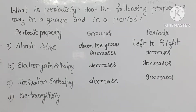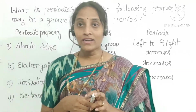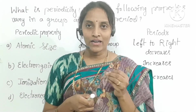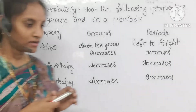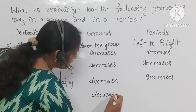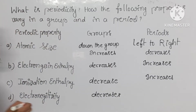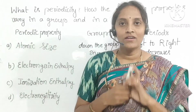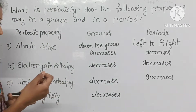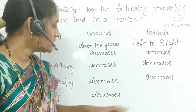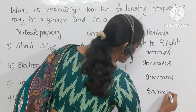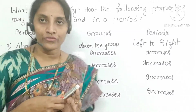Coming to electronegativity — the relative tendency to attract the bond pair of electrons towards itself. In groups, electronegativity decreases down the group because of larger atomic size and greater screening effect, meaning less force of attraction to drag the bond pair of electrons. In periods, electronegativity increases from left to right because of smaller size and more force of attraction.